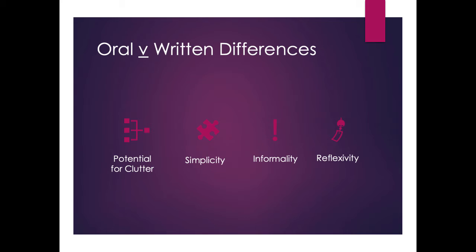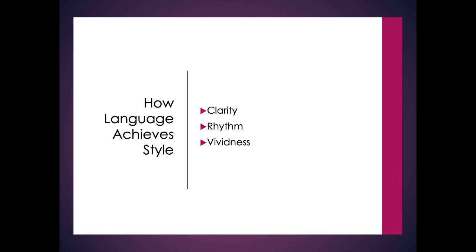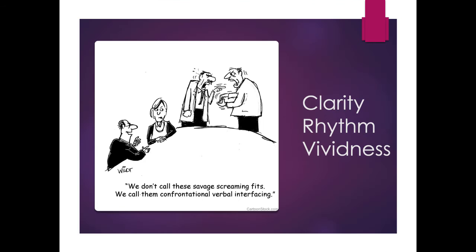So those are four ways that oral and written speech differ. We know what style is, and we can see that really good speakers — in politics, entertainment, causes, or even commercialism like Steve Jobs — all have a style. So how do we achieve that style? We're going to look at achieving style through clarity, rhythm, and vividness.